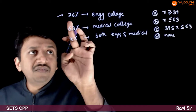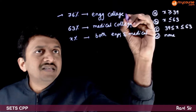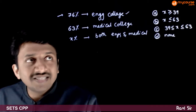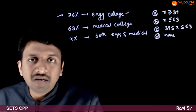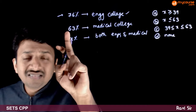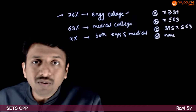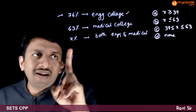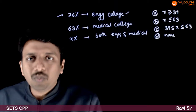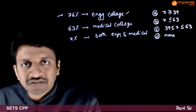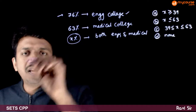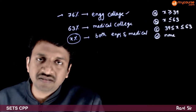In this question, we are given that 76% of the students are likely to go to engineering college, 63% are likely to go to a medical college, and X% are likely to go to both engineering and medical colleges. What can you say about the number X?